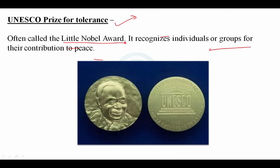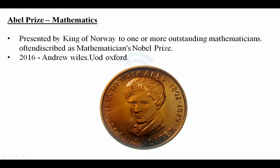The Abel Prize is given in the field of mathematics, presented by the King of Norway to one or more outstanding mathematicians. It is often described as the Mathematician's Nobel Prize. In 2016, it was given to Andrew Wiles, a professor at Oxford University.